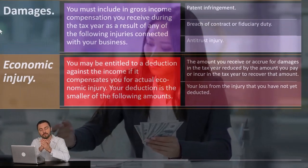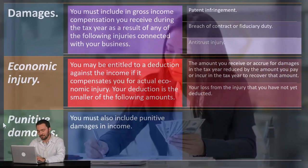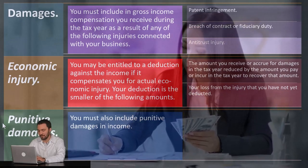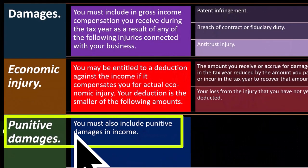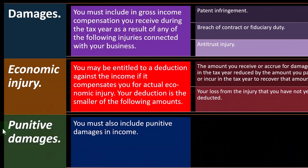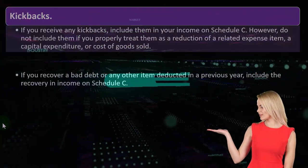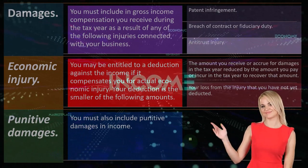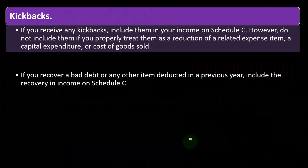So your loss from the injury that you have not yet deducted. Punitive damages are damages not to recover the injury but to punish the person, and therefore you're going to be receiving generally income for punitive damages in a lawsuit. You must include punitive damages in income. There are not going to be related expenses because they're not recouping from damages but are punitive in nature.